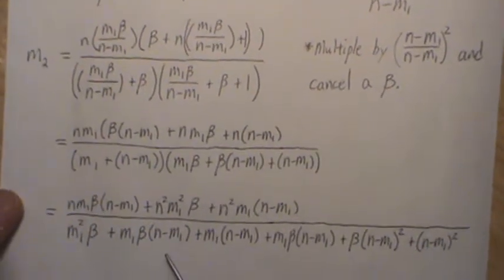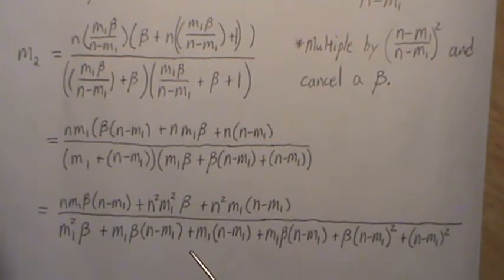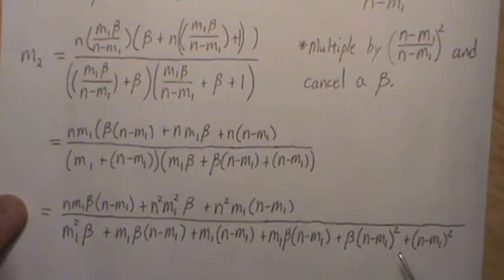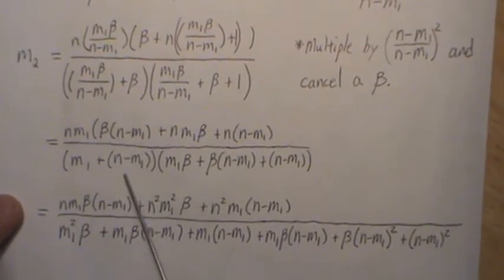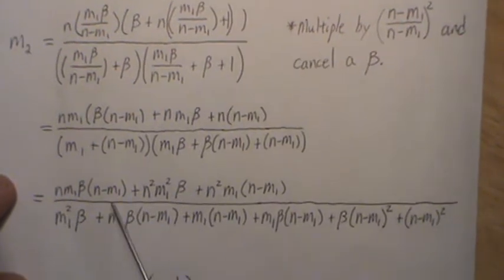Now, let's multiply this n everywhere. And then we multiply the denominator, and we get this.